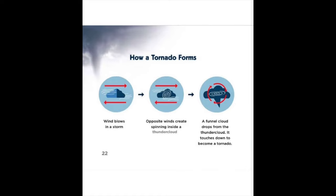How a tornado forms: wind blows in a storm, and opposite winds create spinning inside a thundercloud. A funnel cloud drops from the thundercloud, then touches down to become a tornado.